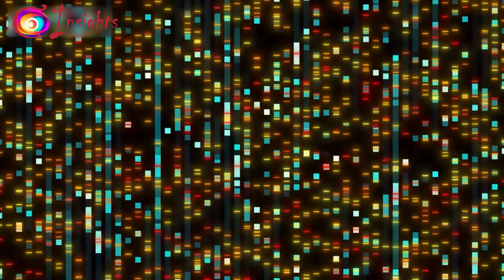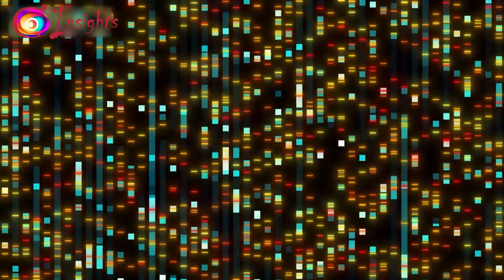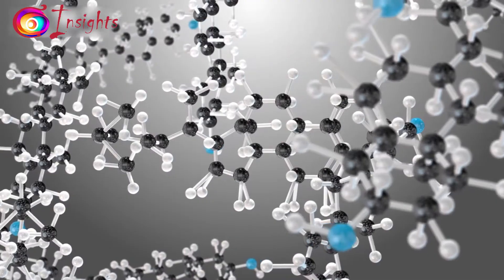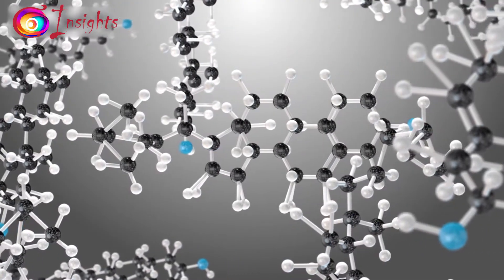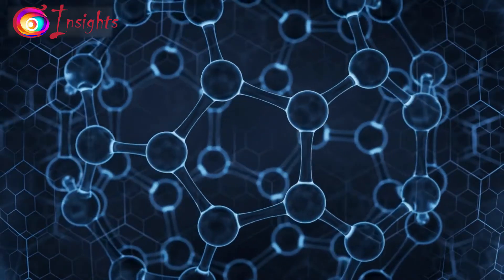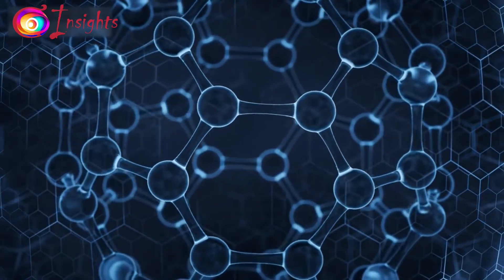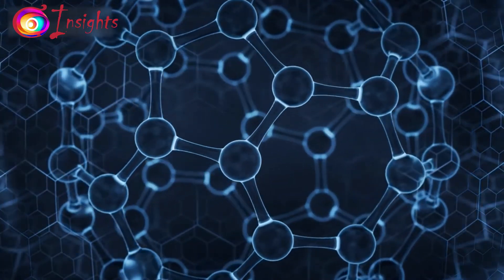Earth's oceans contained a rich mix of chemicals: amino acids, nucleotides, and lipids, essential components for the formation of proteins, nucleic acids, and cell membranes. Through a series of chemical reactions, these molecules began to interact and combine, slowly giving rise to more complex compounds.